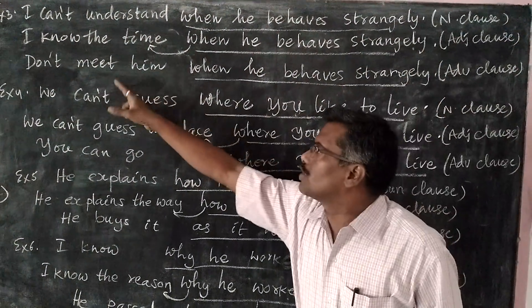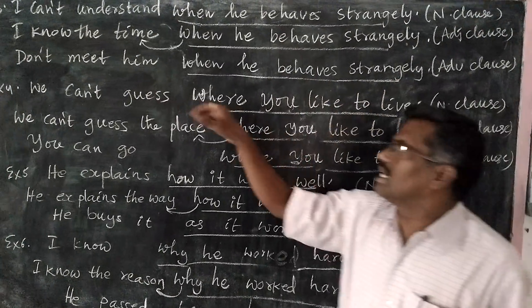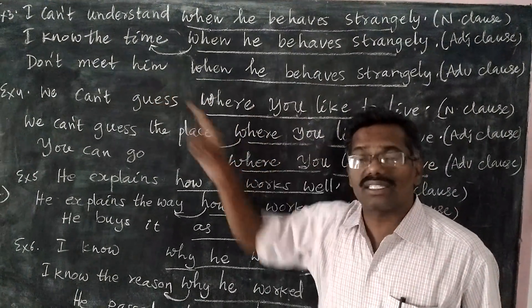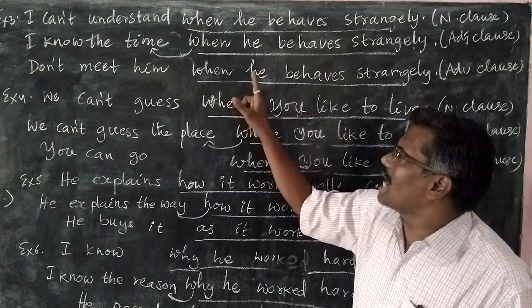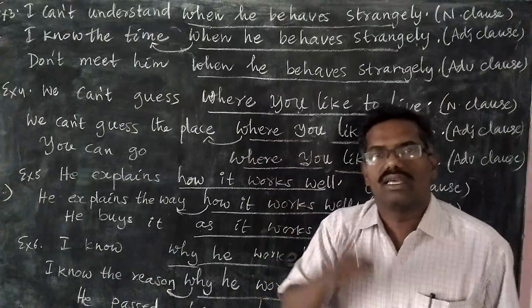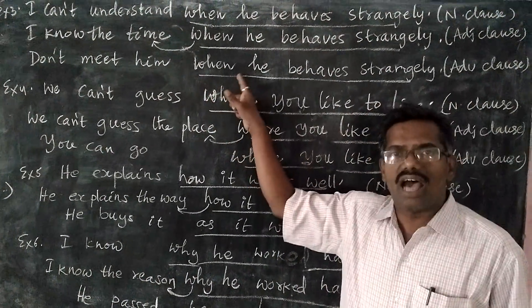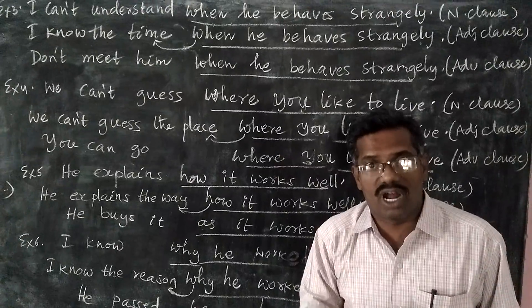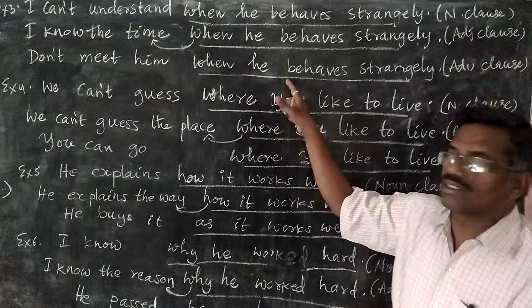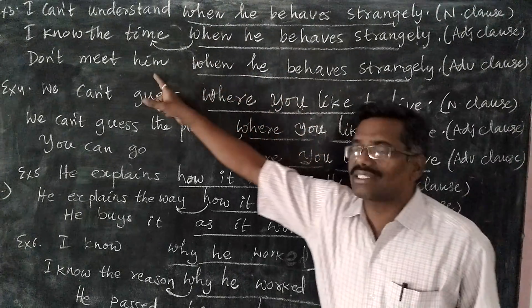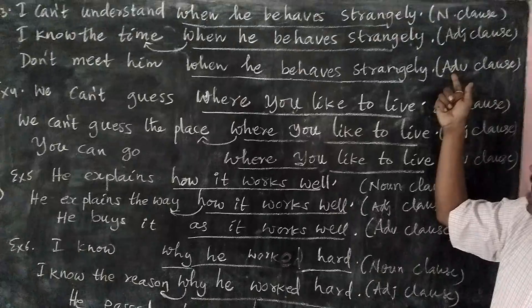Third: 'Don't meet him when he behaves strangely.' Here, this clause answers not the question 'what' but the question 'when.' So a clause, when it answers a WH word other than 'what' — when, where, why, how — it is called adverb clause. Here it answers 'when,' so it is called adverb clause.